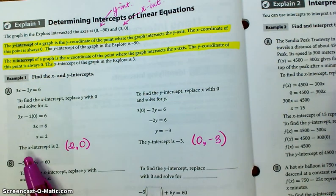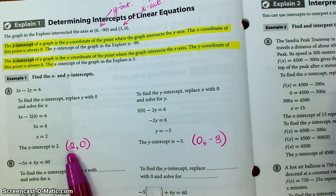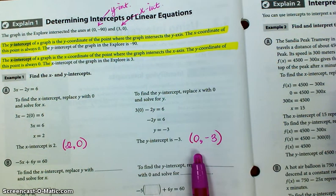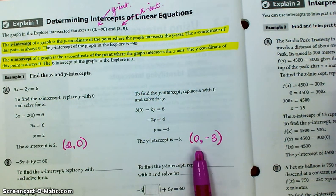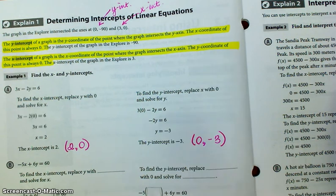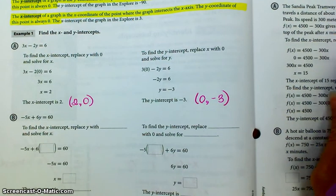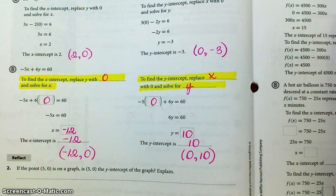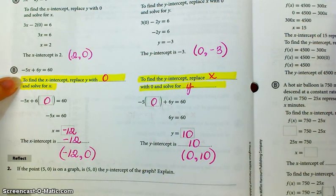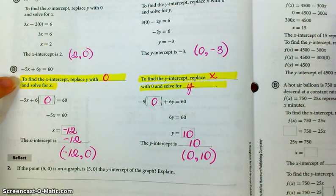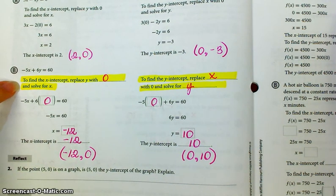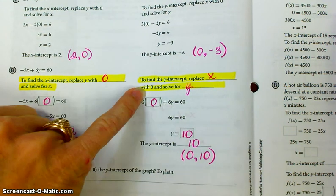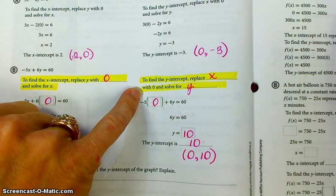So the x-intercept is going to have an ordered pair of 2, 0. And the y-intercept is going to have an ordered pair of 0, 3. All right, so do b. Okay, so remember to find the x-intercept, replace the y with 0 and solve for x. To find the y-intercept, replace the x with 0 and solve for y.